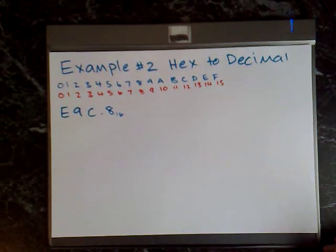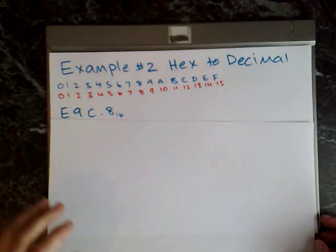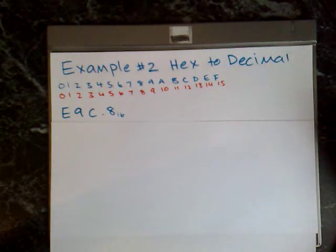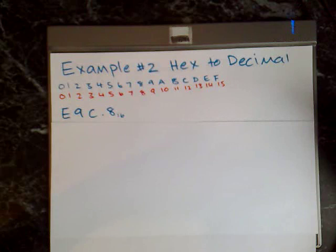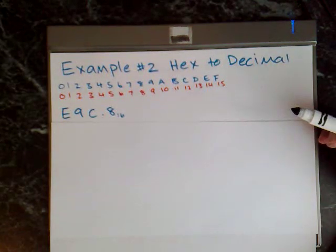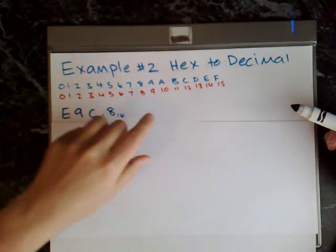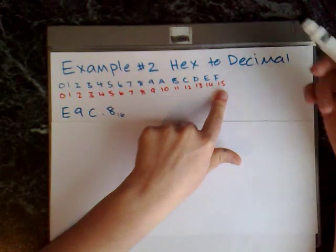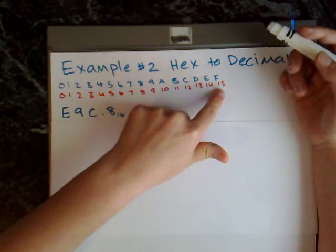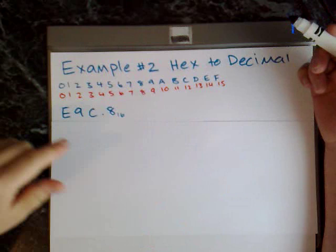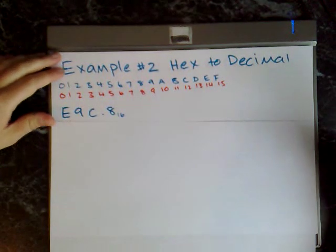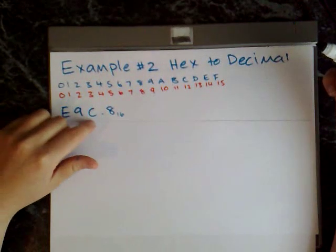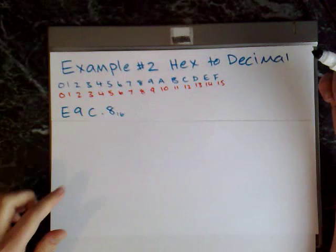For the second example I'm going from hex to decimal. So the hex number system is called base 16. That means there are 16 different numbers in the number system. They go from 0 to 9 and then they go A, B, C, D, E and finish at F. And then below in red I've written the decimal equivalent for each hex number. So the number I'm going to convert is E9C.8 and that's base 16.